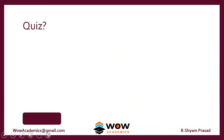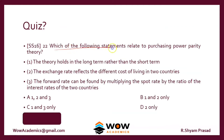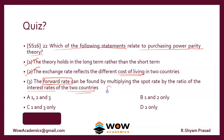Now for a quiz — which of the following statements relate to Purchasing Power Parity theory? Statement 1: the theory holds in the long term rather than the short term — that is true. Statement 2: the exchange rate reflects the different cost of living in two countries — that is true, which is what inflation represents. Statement 3: the forward rate can be found by multiplying the spot rate by the ratio of interest rates — this is wrong, because PPP uses inflation rates and gives an expected spot rate, not a forward rate. The correct answer is B (statements 1 and 2).